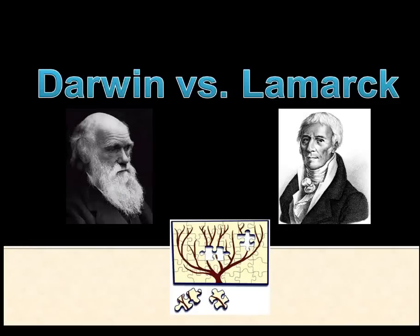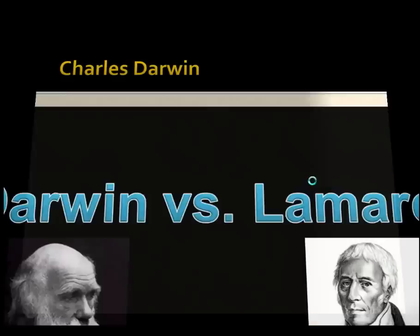Let's talk about the evidence for evolution and a couple competing ideas: Charles Darwin's idea of natural selection and Jean-Baptiste Lamarck's idea of inherited, or acquired, traits.